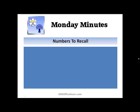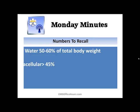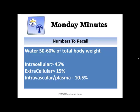Some numbers that are good to recall when we talk about fluid balance and electrolytes: water is 50 to 60% of total body weight. Your intracellular fluid is about 45%, your extracellular fluid is about 15%, and then your plasma — your intravascular fluid — is about 10%, with your interstitial fluid at about 4.5%. These are important numbers to remember because you might see on exams questions about the percentage of water in the body, the percentage of plasma, or intracellular fluid.